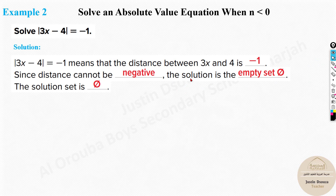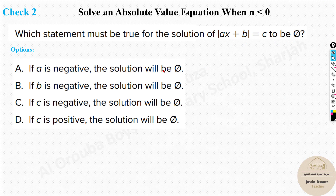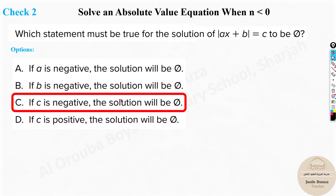Essentially, this equation is saying the distance between two points is negative one, which is impossible. Now for a multiple-choice question about which condition makes an absolute value equation a null set: if A is negative — wrong, you can still get answers. If B is negative — also wrong. If C is negative — yes, that's correct, because the right-hand side of the equation cannot be negative. If C is positive it's fine, but negative C means no solution.